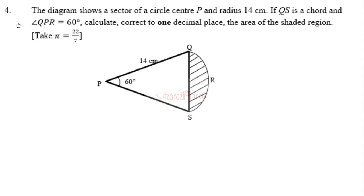WASSCE 2017 November/December Mathematics. Question 4: the diagram shows a sector with center P and radius 14 centimeters. QS is a chord and angle QPR is 60 degrees. Calculate, correct to one decimal place, the area of the shaded region. Take pi equal to 22 over 7.